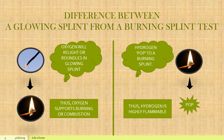Now for the difference between a glowing splint and a burning splint: on the left, the glowing splint is the test for oxygen. When exposed to the presence of oxygen, it will burn and relight or rekindle — this shows that oxygen supports burning or combustion. On the right side is the test for hydrogen — we use a lighted or burning splint. Upon inserting it into a test tube containing hydrogen, a pop sound will occur, confirming that hydrogen is highly flammable.